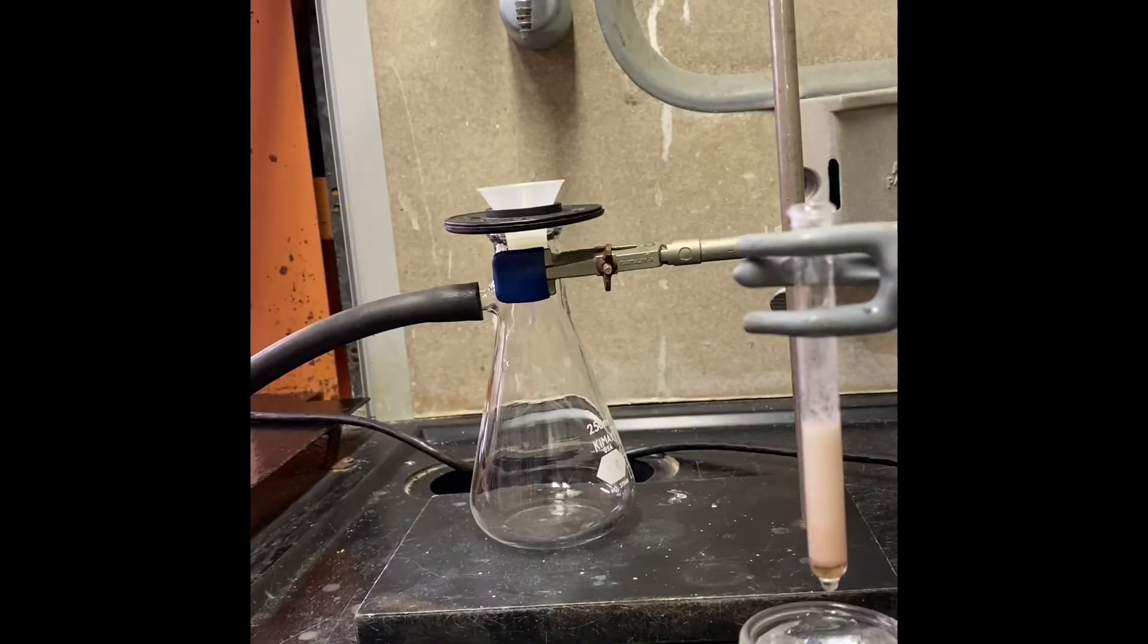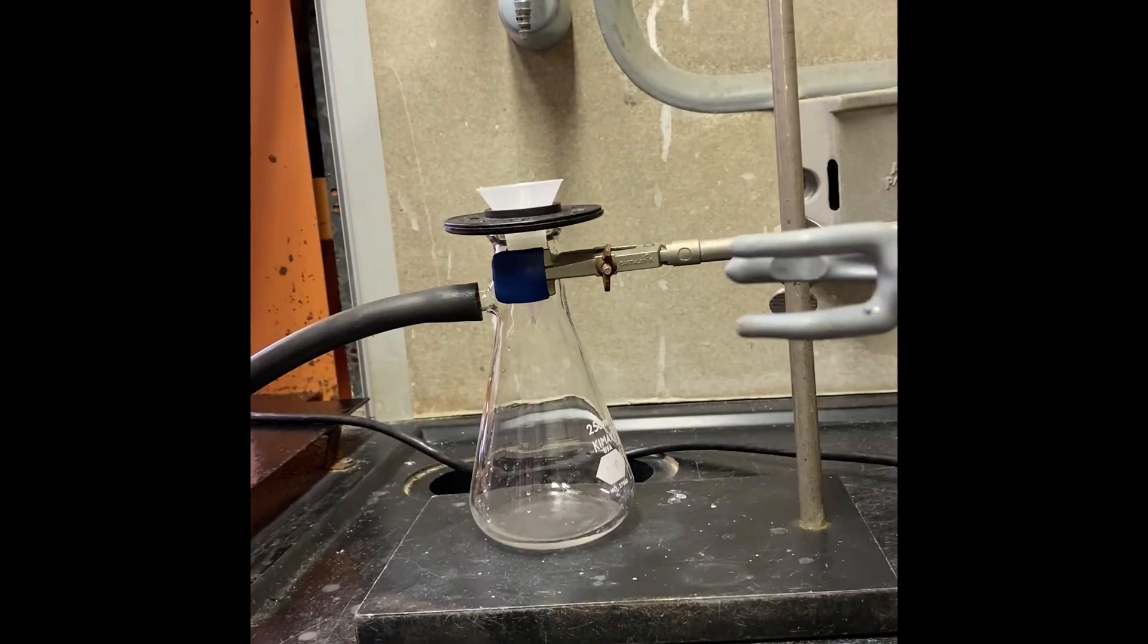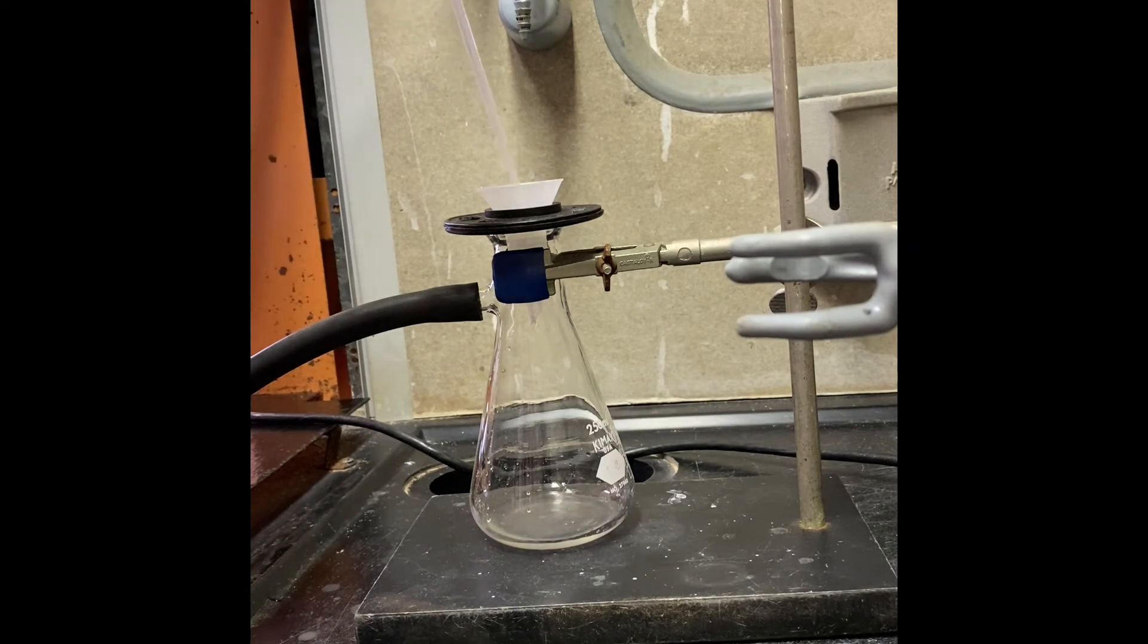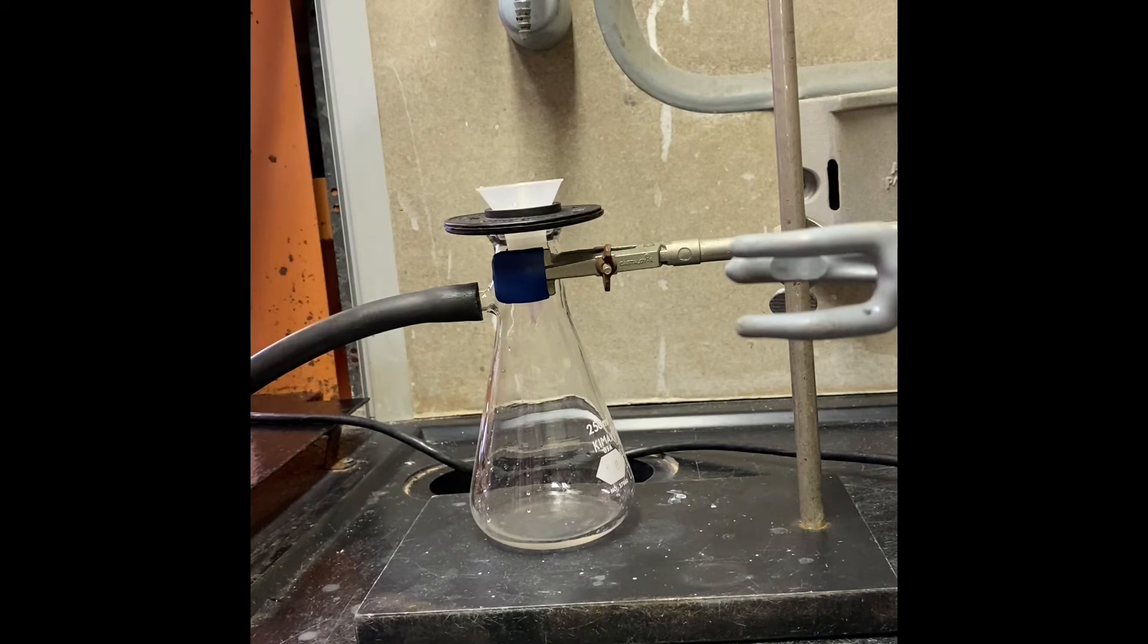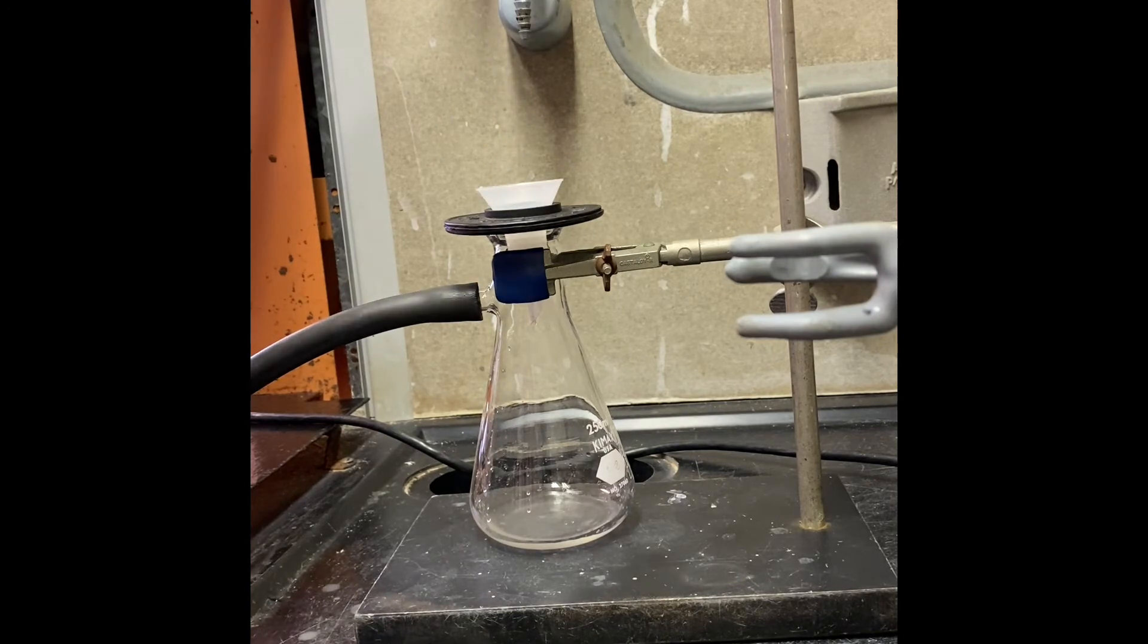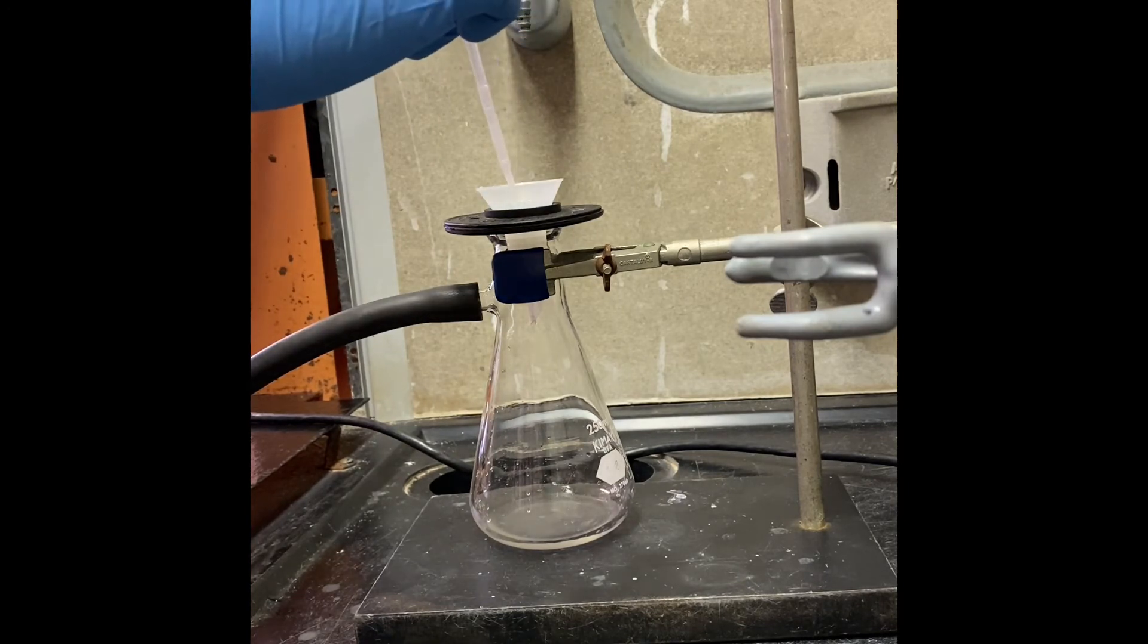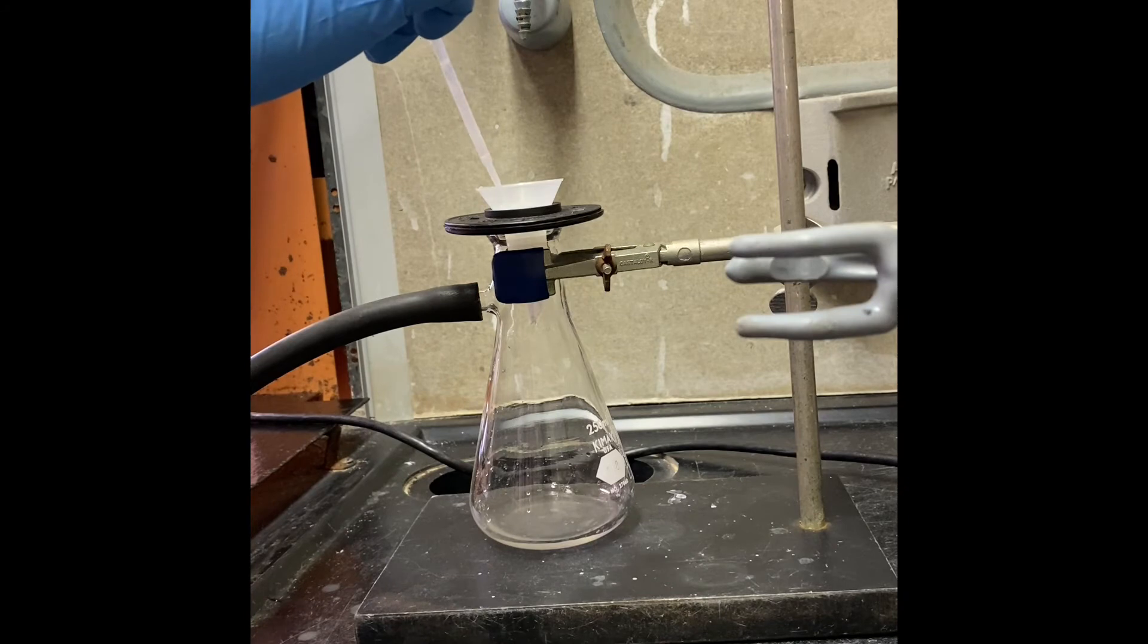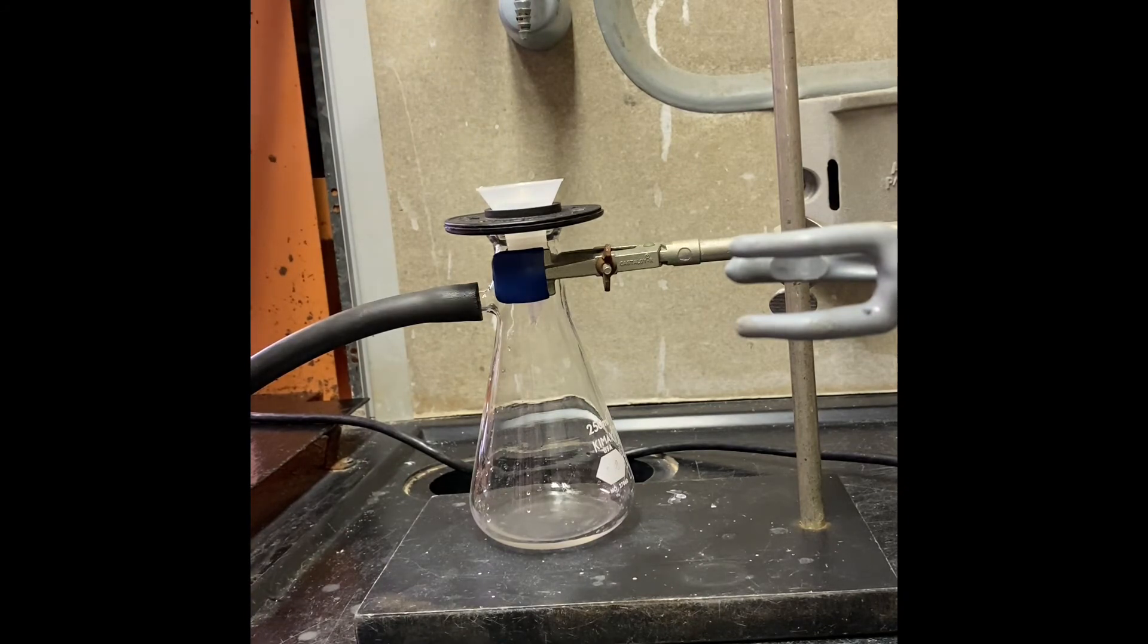This is our vacuum setup. For washing, we're going to add some water, so we turn off the vacuum. We're going to put some water, a couple of water, go back. Wash that out.